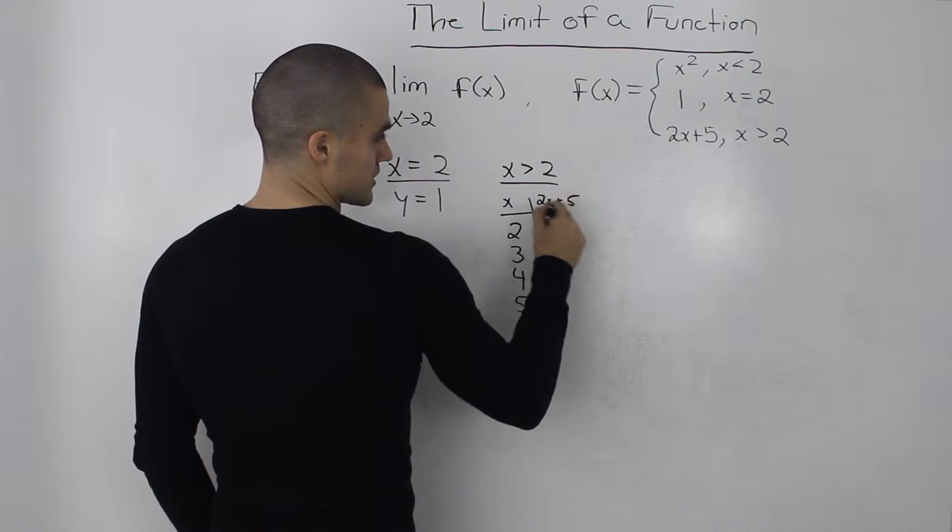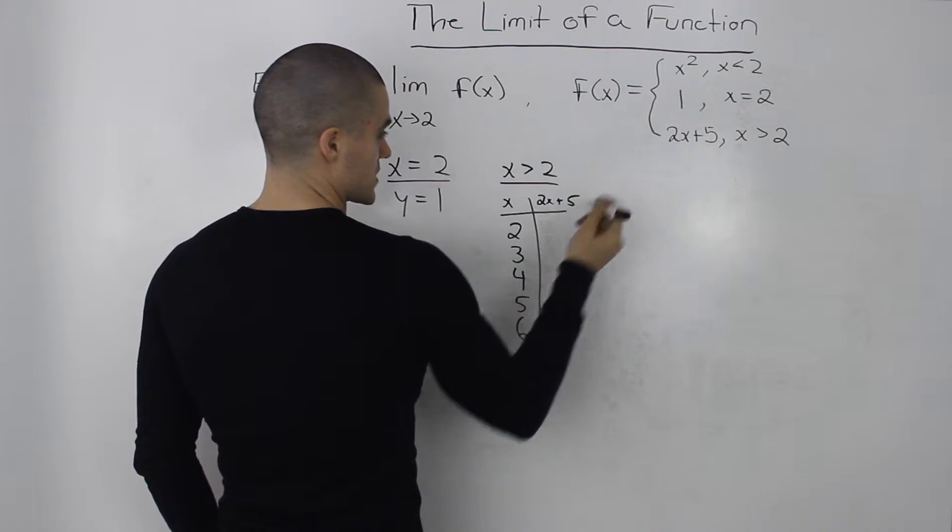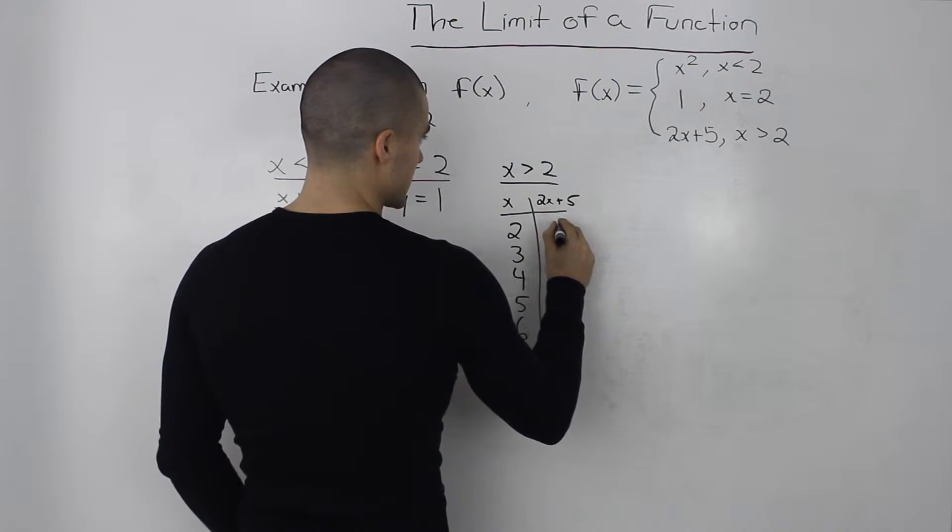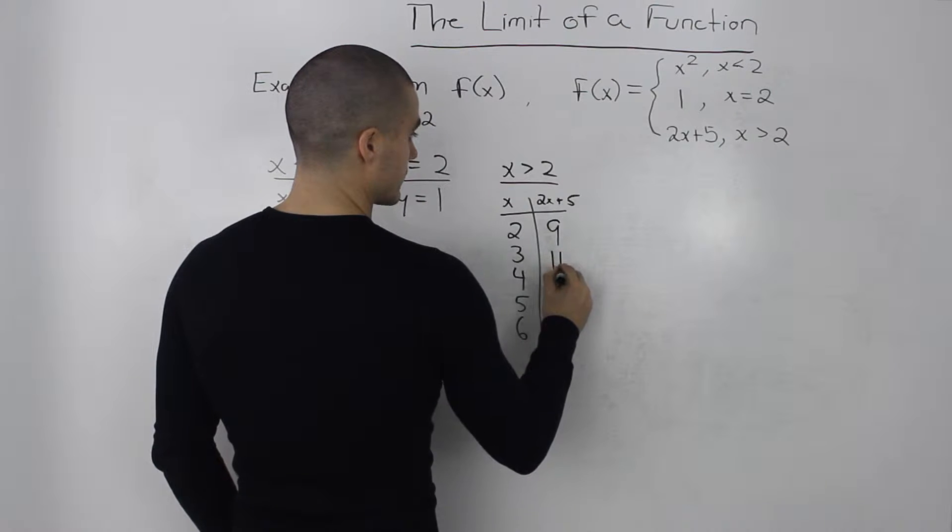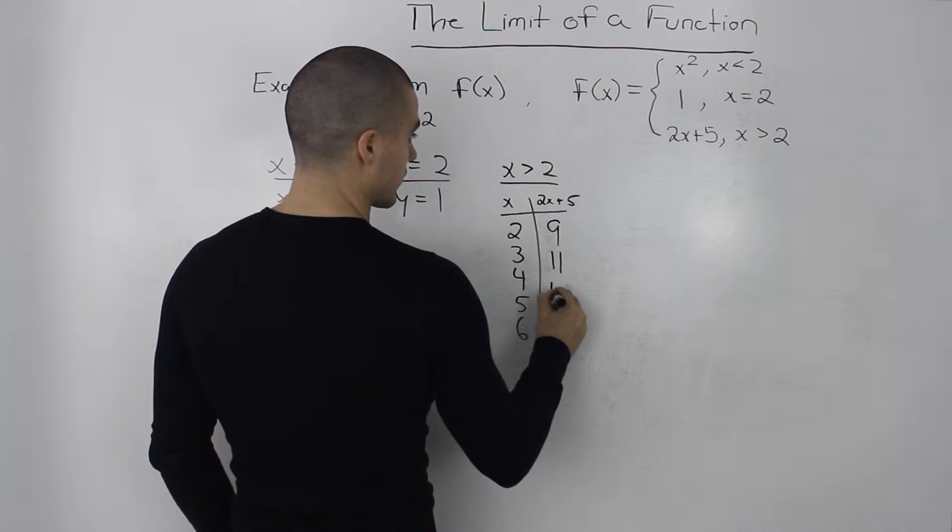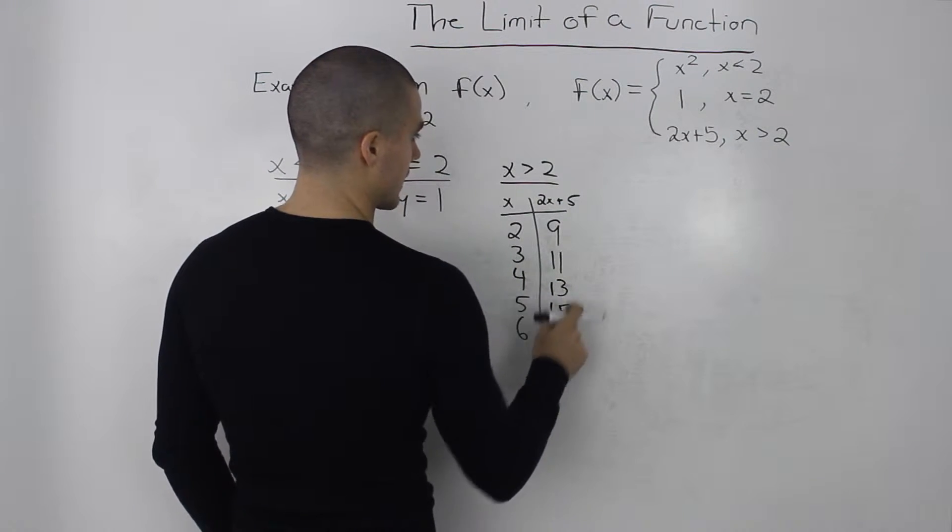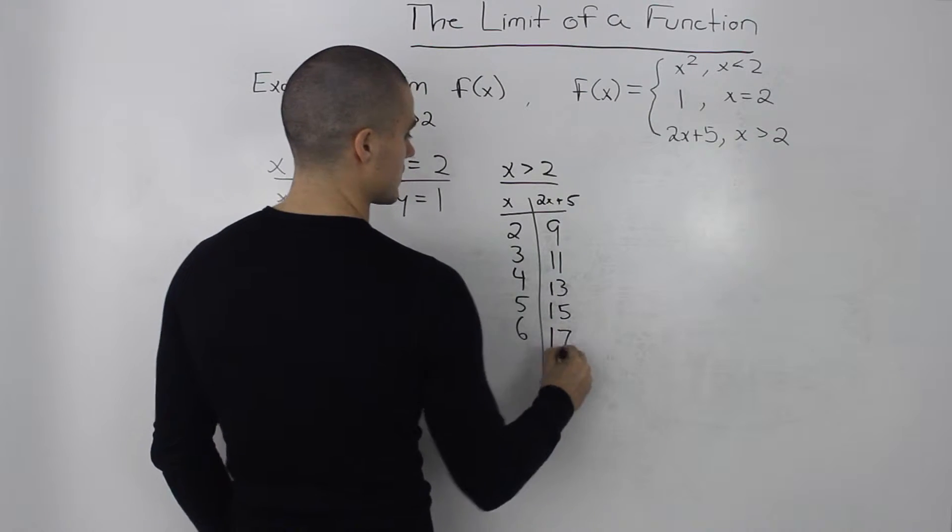So plugging 2 into this equation, into this 2x plus 5, we'll get 9. Then we'll get 11, plugging in 4, we'll get 13, 15, and then 17 here.